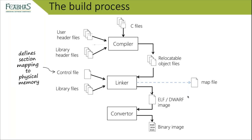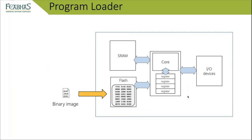The linker produces an ELF file (Executable and Linkable Format), which is the most common output format. A converter then transforms it into a raw binary image. This object file converter is normally part of the toolchain. Once we have the raw binary image, we need to load it into flash — most commonly via a JTAG connection, an embedded flash tool over a serial port, or more extensive methods like over-the-air updates via wireless, CAN, or USB.